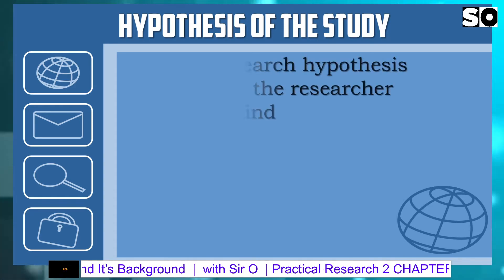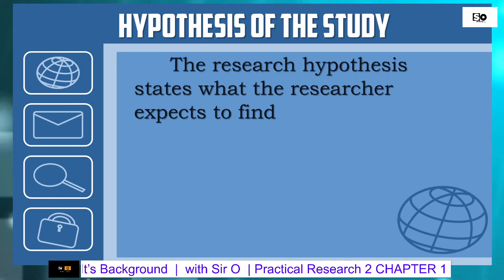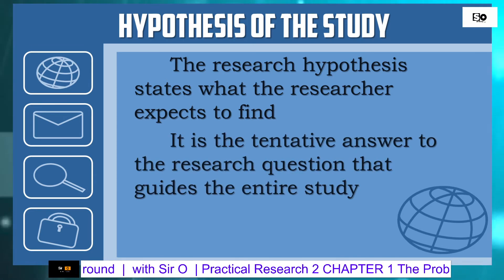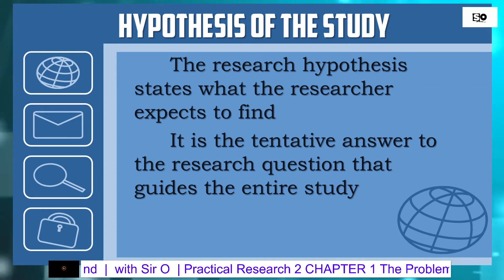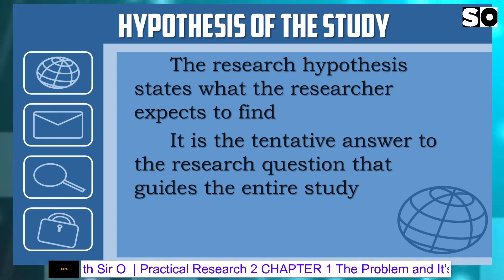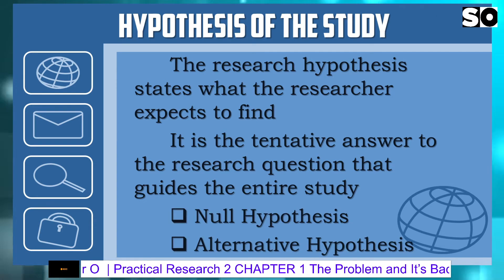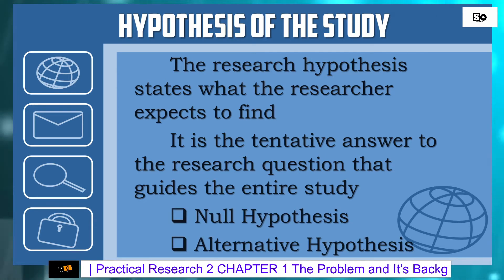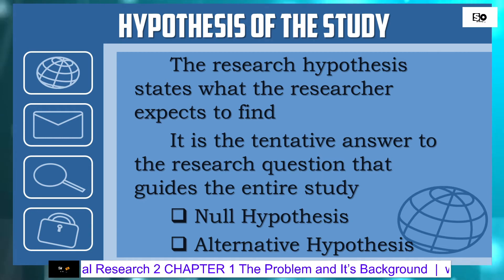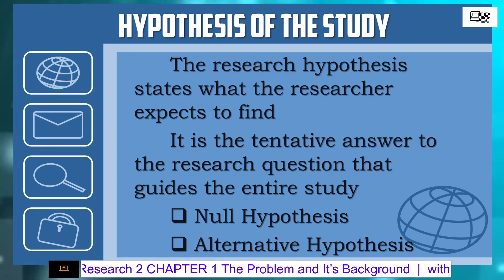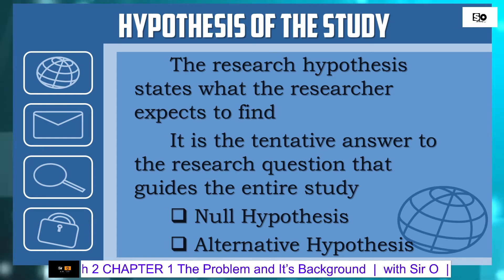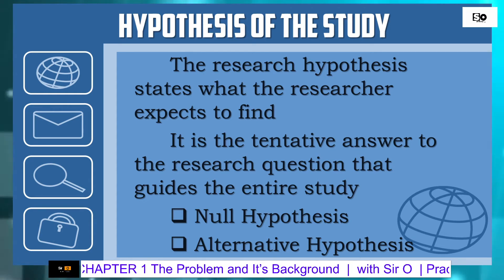Hypothesis of the study. The research hypothesis states what the researcher expects to find. It is the tentative answer to the research questions that guides the entire study. The hypothesis has two types: the null hypothesis and the alternative hypothesis. The null hypothesis is used in statistics and proposes that there is no difference between certain characteristics of the population, while the alternative hypothesis is just an alternative to the null hypothesis.